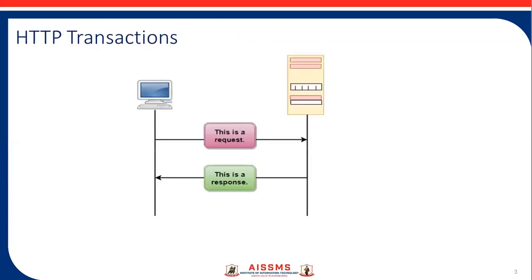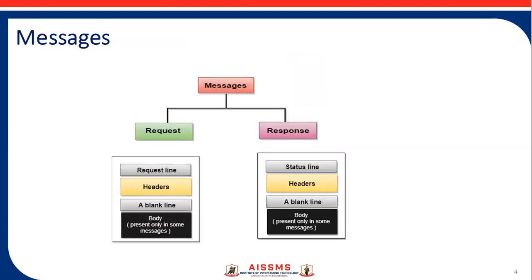Next is the HTTP transaction. The given figure shows the HTTP transaction between client and server. The client initiates a transaction by sending a request message to the server, and the server replies by sending a response message or acknowledgement. HTTP messages are of two types: request message and response message. Both message types follow the same format. The request message is sent by the client and consists of a request line, headers, and sometimes a body. The response message is sent by the server to the client and consists of a status line, header, and sometimes a body.